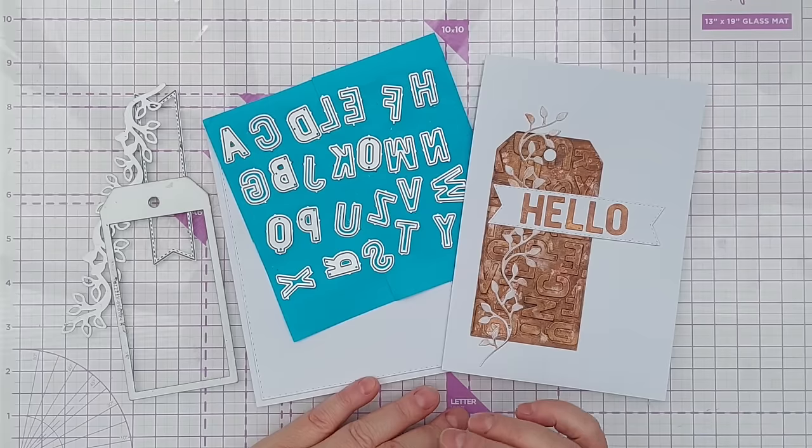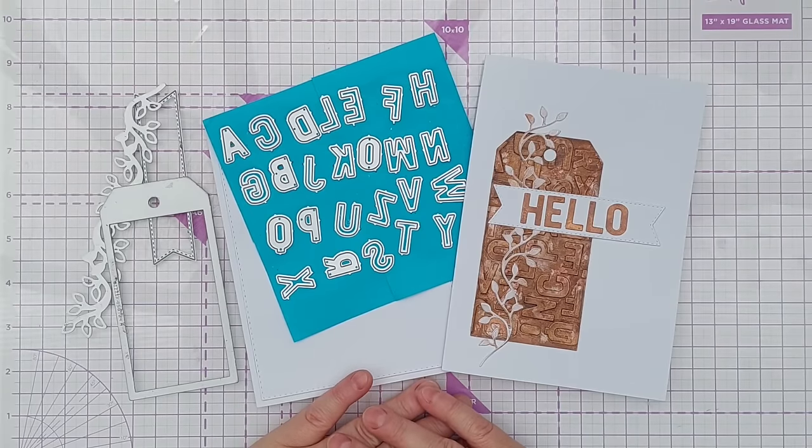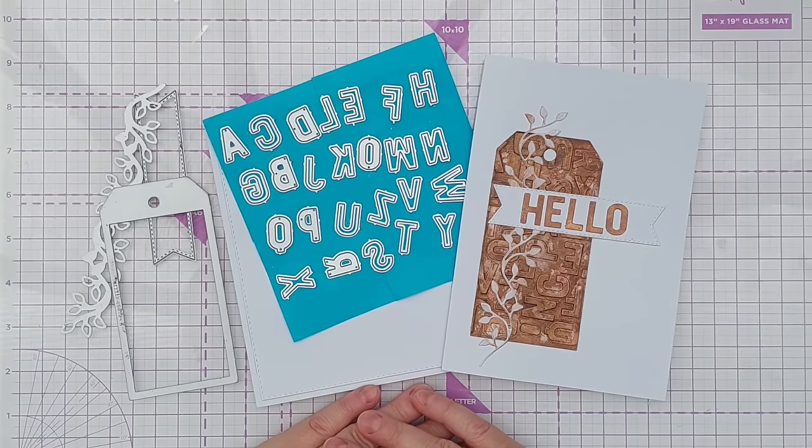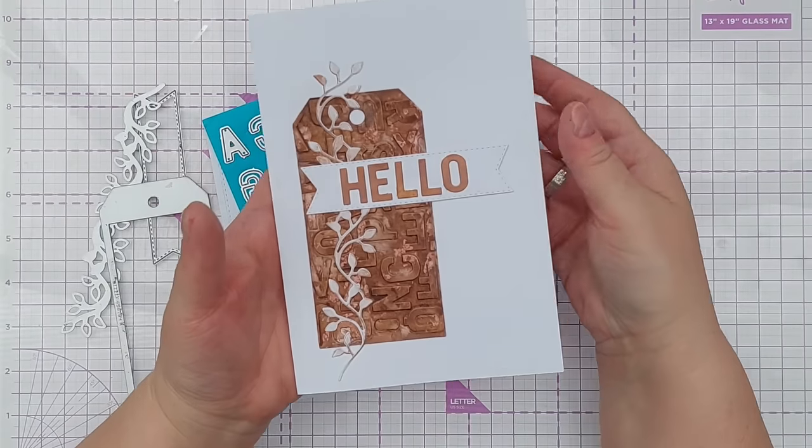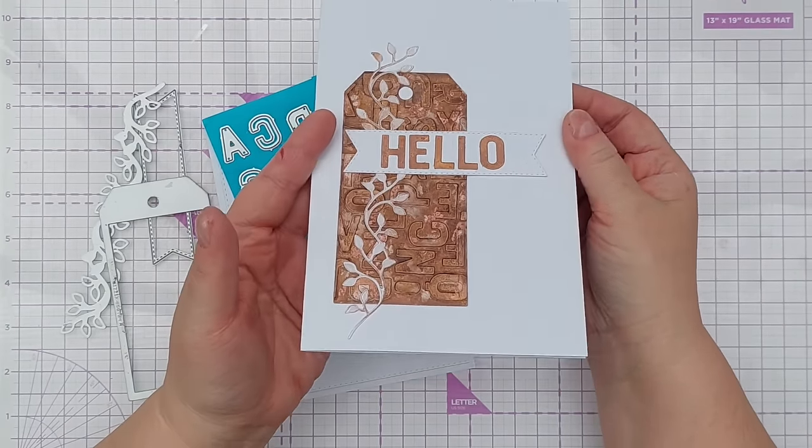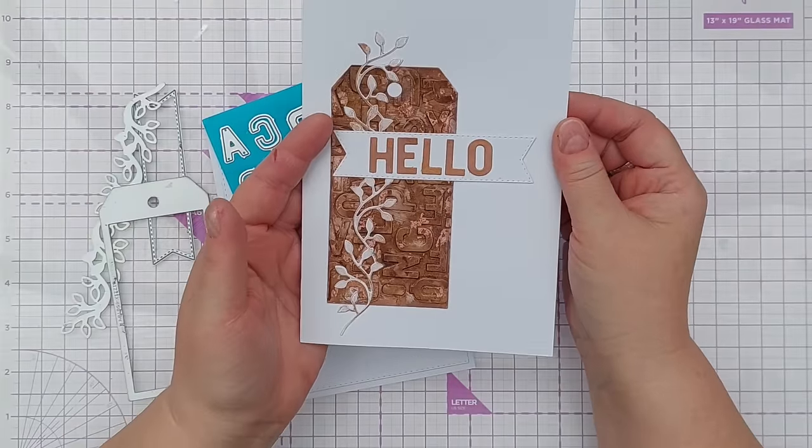Do check out the previous videos which I will link in the video description if you want to know techniques numbers 1 to 11. But this is the card I made yesterday using my alphabet dies and I'll show you today how I did that.